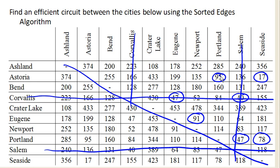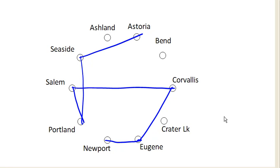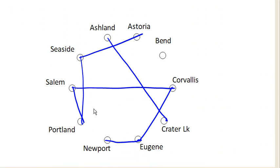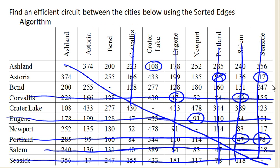Next is Ashland to Crater Lake for 108. We can add that one just fine. Now we can eliminate Portland, Seaside, and Eugene from our list, because they already have degree 2 and we don't want degree 3. So I went ahead and cross them off the list. Now we look for the next cheapest edge.